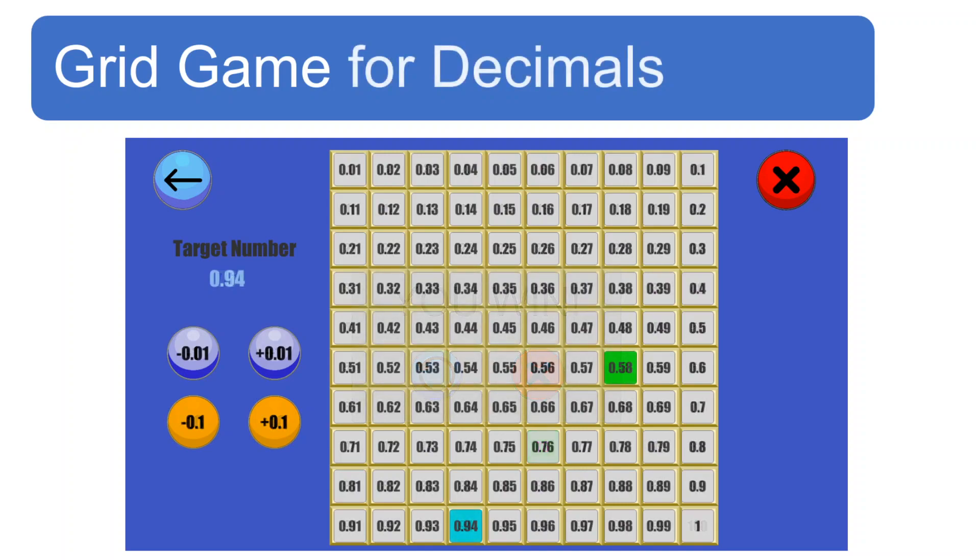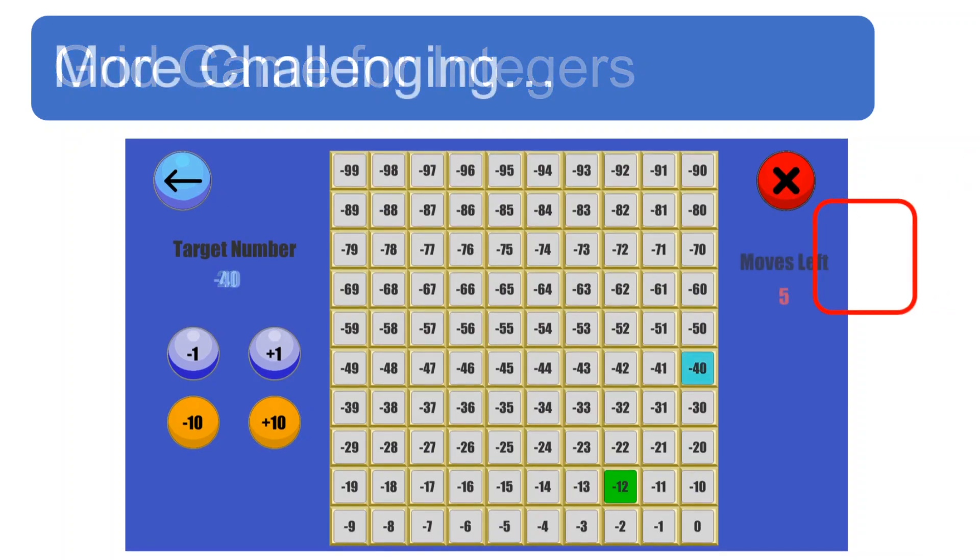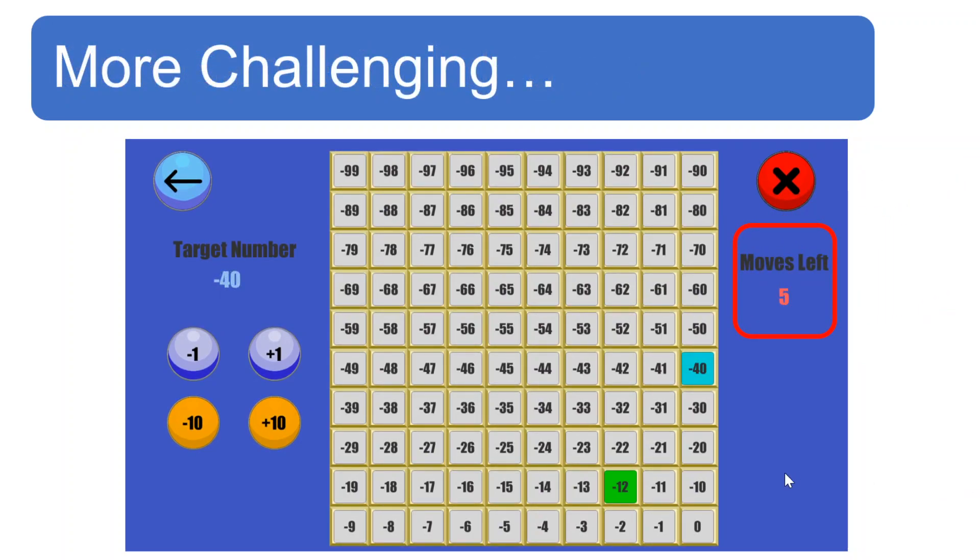May version din tayo para sa decimals at para sa integers. Kahit high school students matuchallenge dito. Halimbawa, anong pipitutin mo para umabot sa target number na 20? Hindi ba kailangan mo mag-isip? Sa mas advanced na level, dapat maabot mo ang target sa loob ng nakasulat na number of moves. Dito, mas kailangan mo mag-isip kasi dapat maabot mo ang target sa pinakamaiksing paraan.